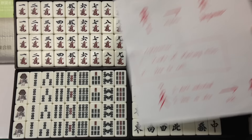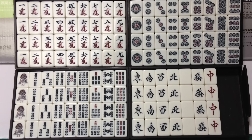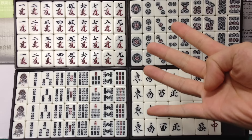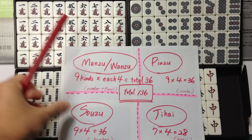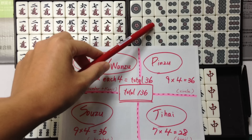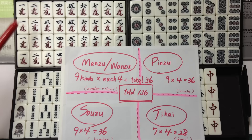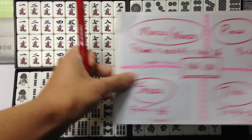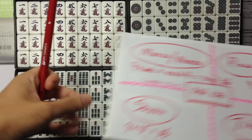These are mahjong tiles. Mahjong tiles are four kinds: Manzu or Wanzu, Pinzu, Sozu, and Jihai.